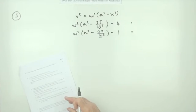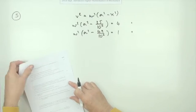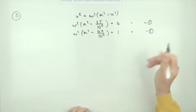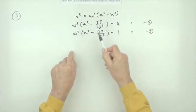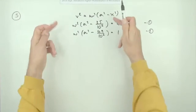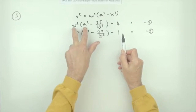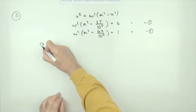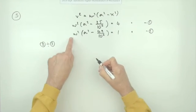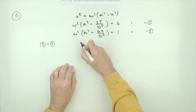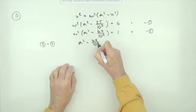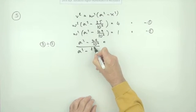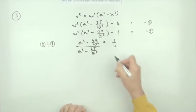Now it's just simultaneous equations. There are two approaches: dividing the equations to eliminate ω², or expanding and subtracting. Doing division — equation 2 divided by equation 1 — the ω² cancels, giving (a² − 49/10⁶) / (a² − 25/10⁶) = 1/4. Cross-multiplying: 4a² − 196/10⁶ = a² − 25/10⁶.